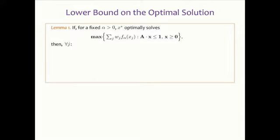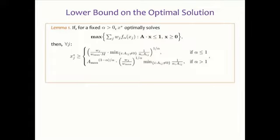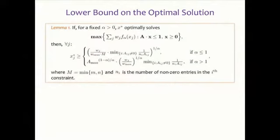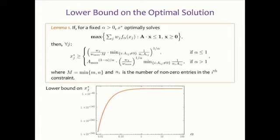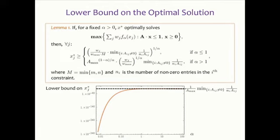We prove that if X* optimally solves alpha-fair packing, each element of X* is bounded from below as a function of the input. This bound is a continuous function of alpha. The bound changes quite dramatically between alpha equals zero and one. When alpha is greater than one, there is much less change, and as alpha goes to infinity you get something roughly one over n times A_max squared. N_i is the number of non-zero elements in constraint i.